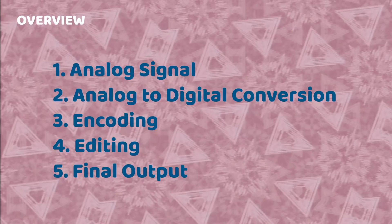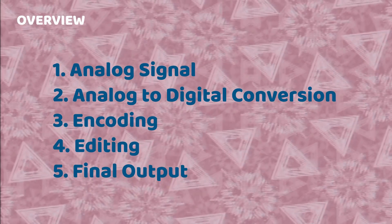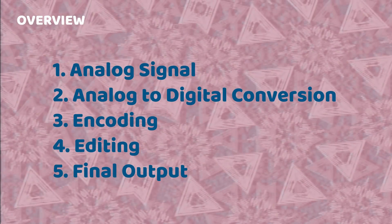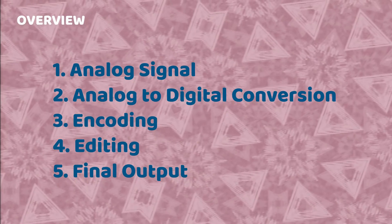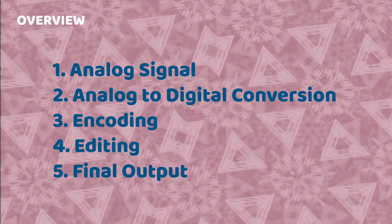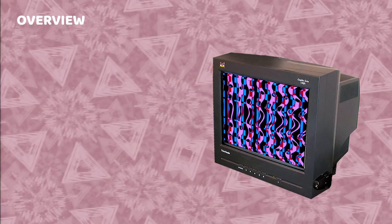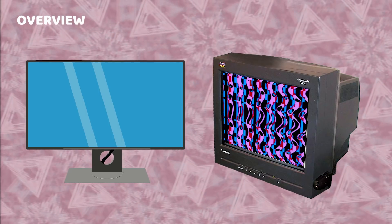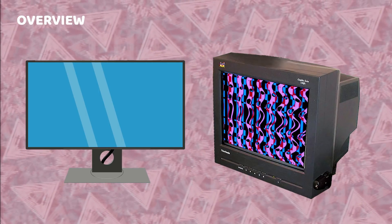This entire process can be broken up into five basic sections: the analog signal itself, then there's an analog to digital conversion, then there's the encoding process, the editing, and finally your output. The process of analog to digital conversion is very complex. While the analog signal is fairly simple, digital standards vary widely, and making sure that you're converting to the correct format for your eventual output is key.